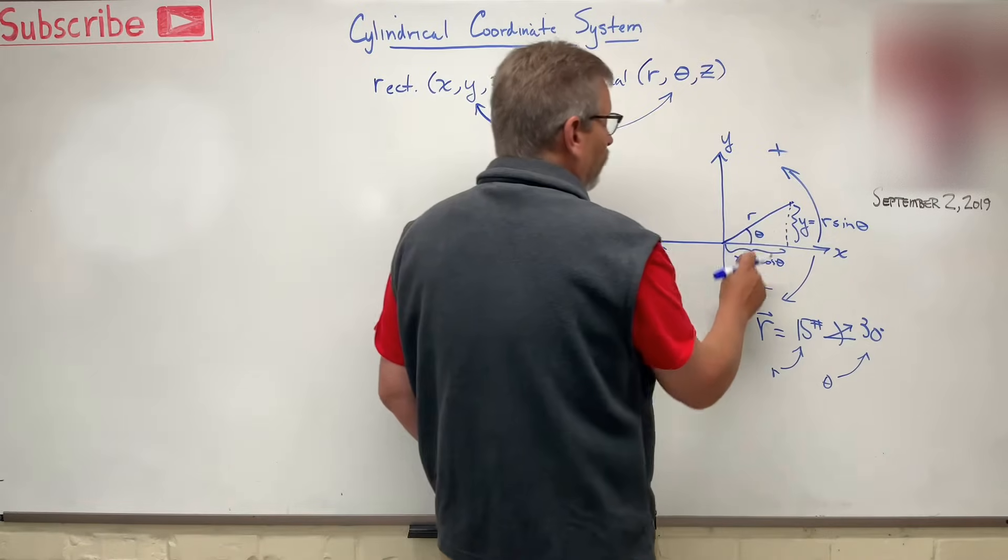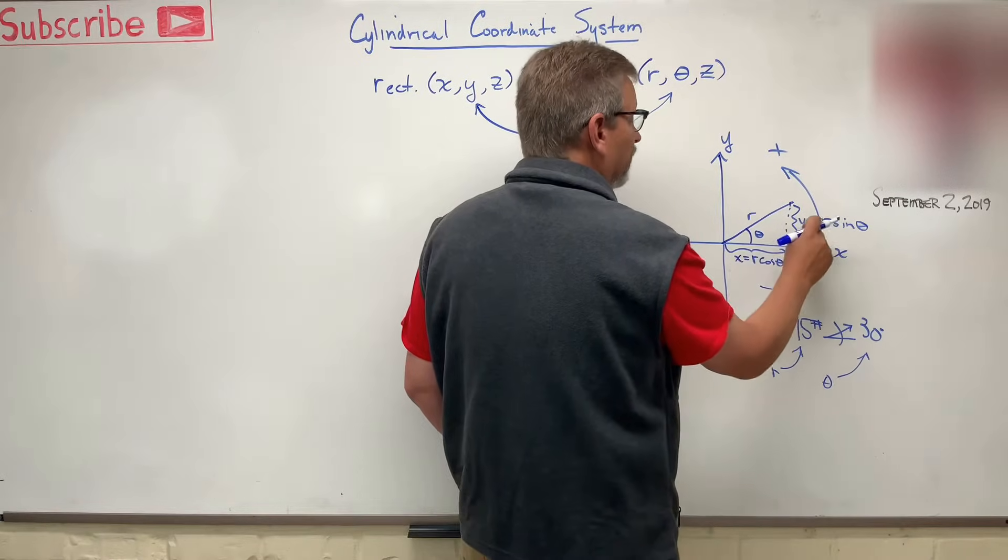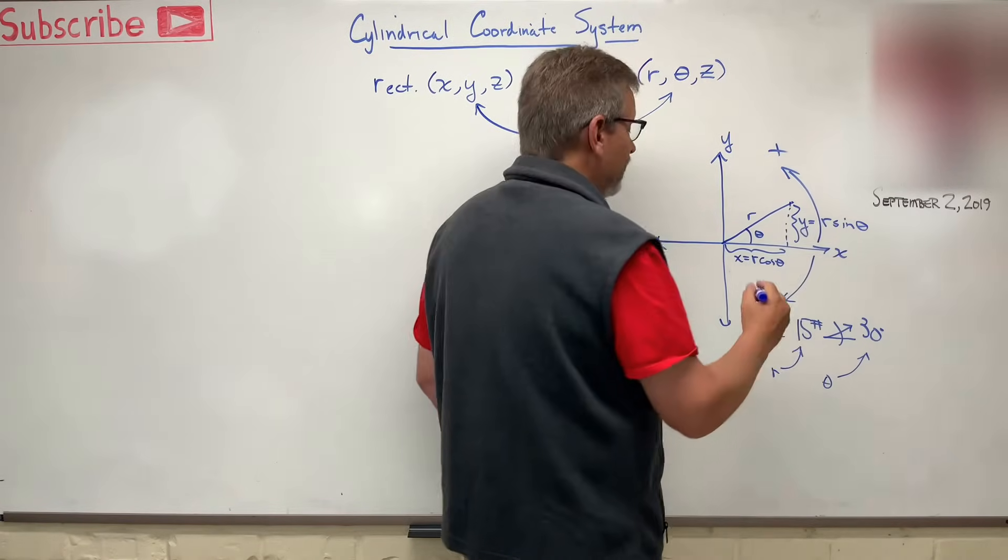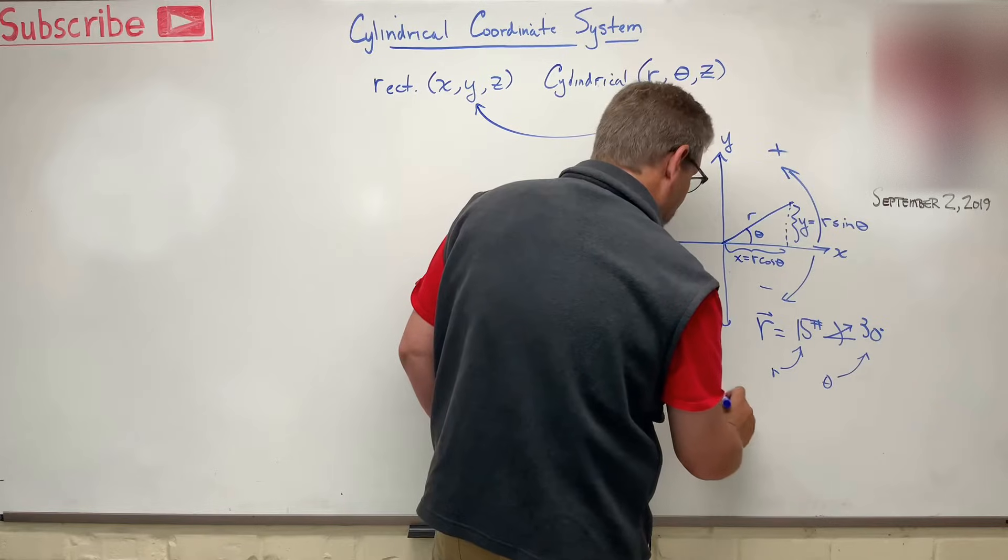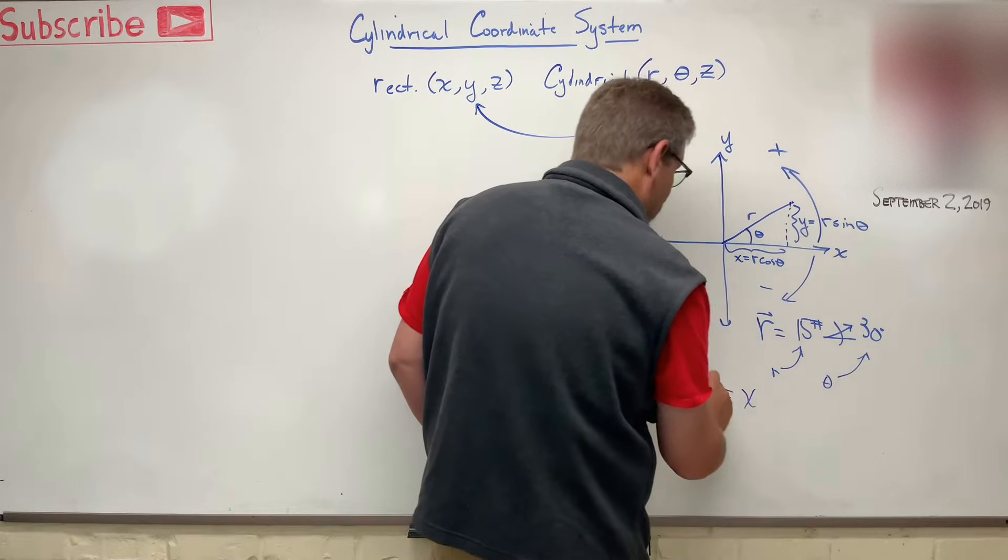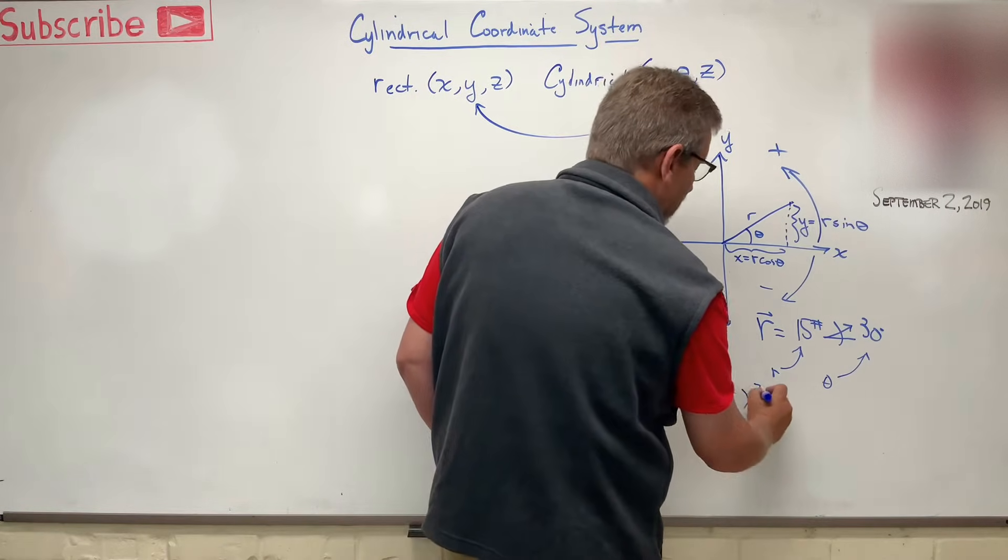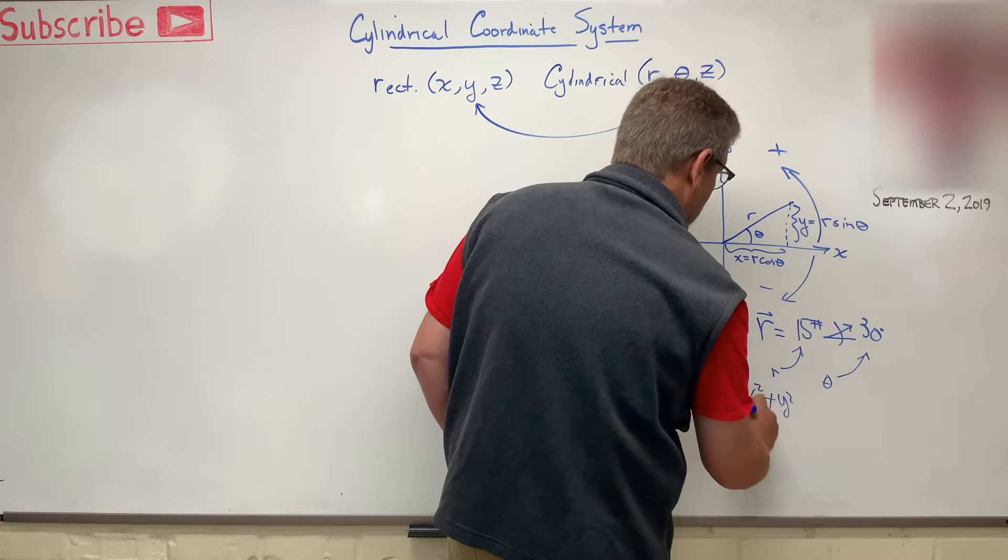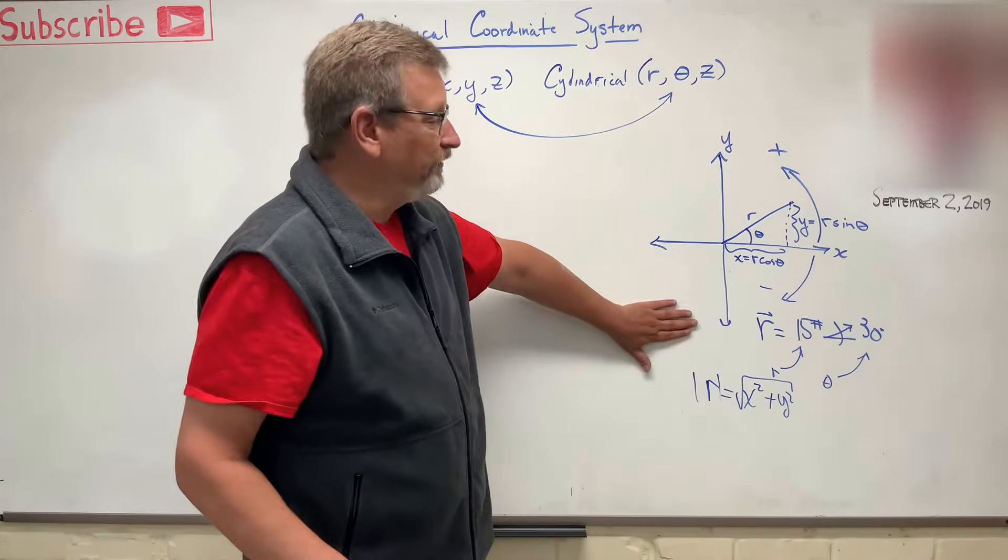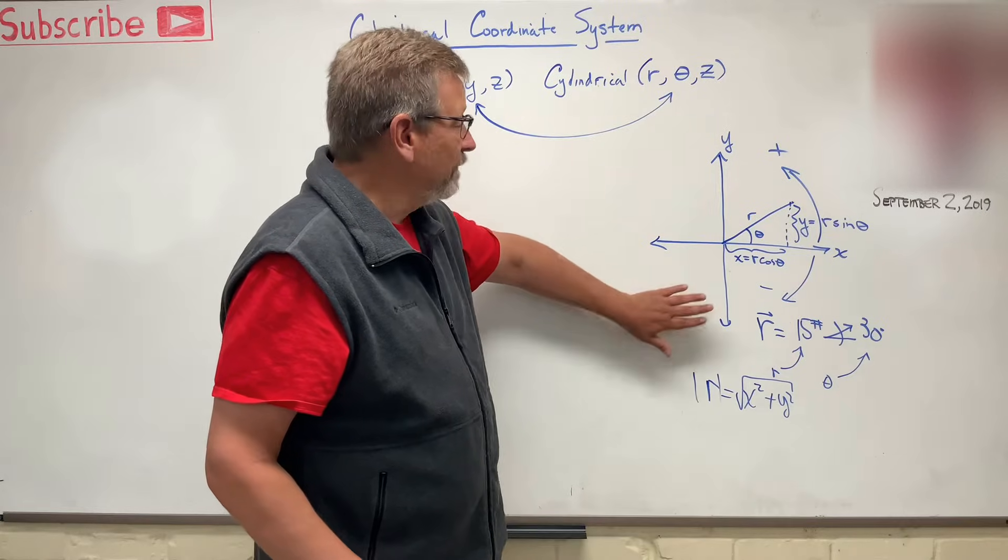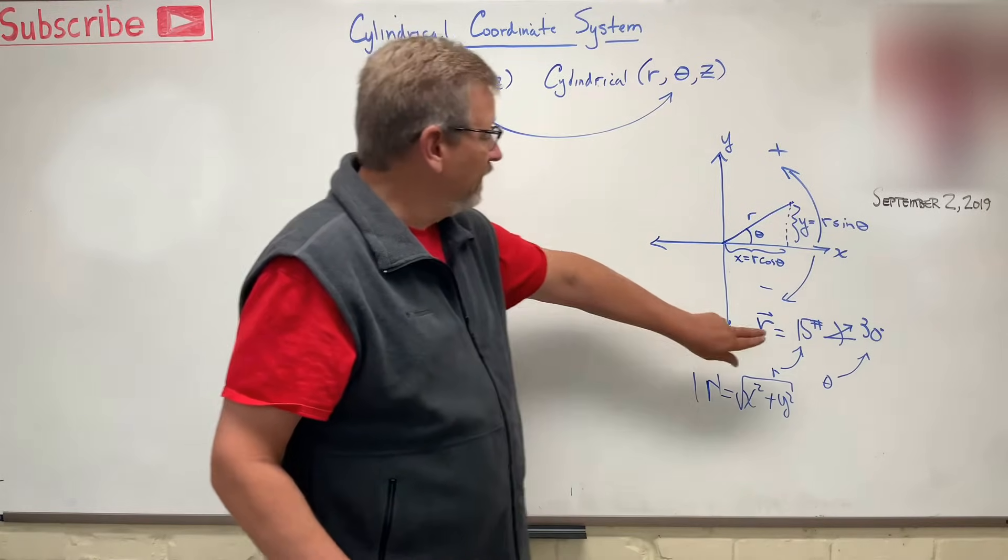And then of course, how big is r? Well, it's x squared plus y squared square root. So r is equal to, or at least the magnitude, we should say the magnitude of r, x squared plus y squared square root. So that's simple stuff. We remember that back from math class. Polar coordinates. So we had an r, and we had a theta.